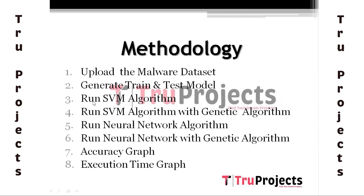In the next module, we will be running the SVM algorithm, where the processed training data is used as input to SVM to predict the model, and this model is applied on 20% of the test dataset to compute SVM prediction accuracy. Similarly, we will run SVM with genetic algorithm, neural network algorithm, and neural network with genetic algorithm. In the seventh module, we compare the accuracy graphs, and then check the execution time of the models.